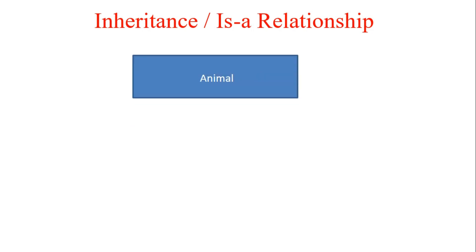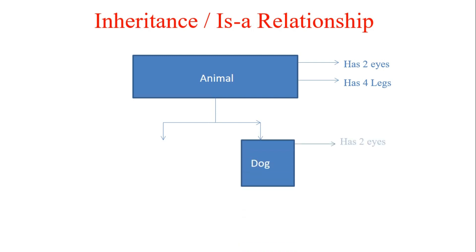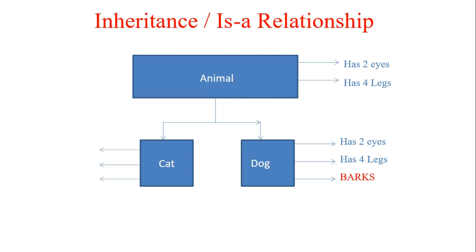The third and very important concept is inheritance. If I have an Animal class which has two eyes and four legs, and a Dog class which also has two eyes, four legs, and barks, and a Cat class which has two eyes, four legs, and meows — inheritance is a mechanism where one object like Dog acquires all the properties and behaviors of a parent object, Animal. Those two eyes and four legs are inherited from Animal, so the Dog class does not need to define those methods itself.